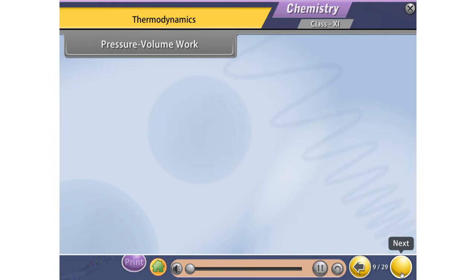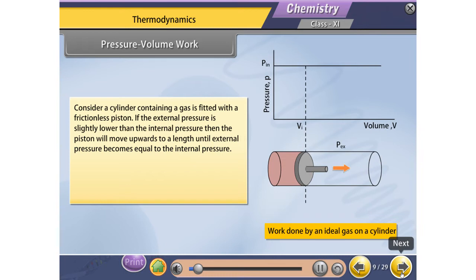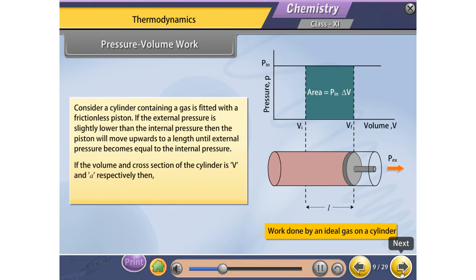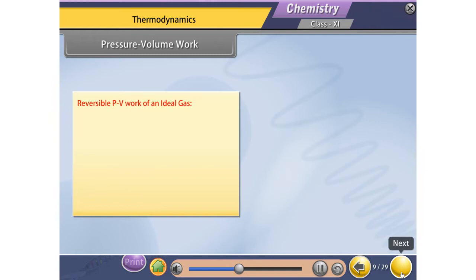Consider a cylinder containing a gas fitted with a frictionless piston. If the external pressure is slightly lower than the internal pressure, the piston will move upwards until external pressure becomes equal to the internal pressure. If the volume and cross-section of the cylinder are V and A respectively, then work done by the system equals P × A × L, which equals P × ΔV.